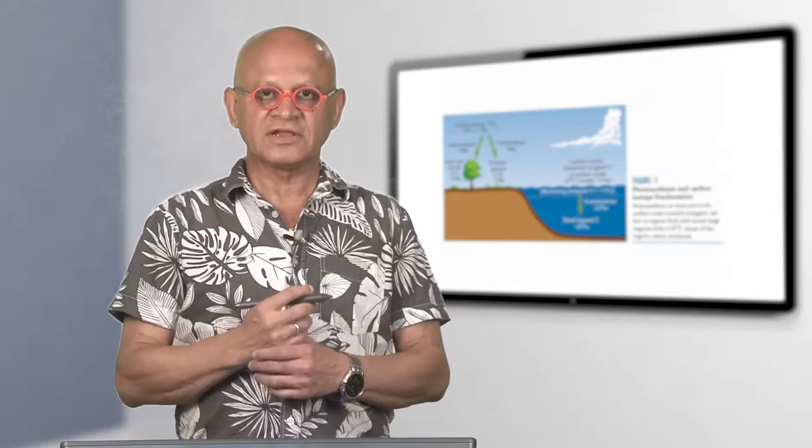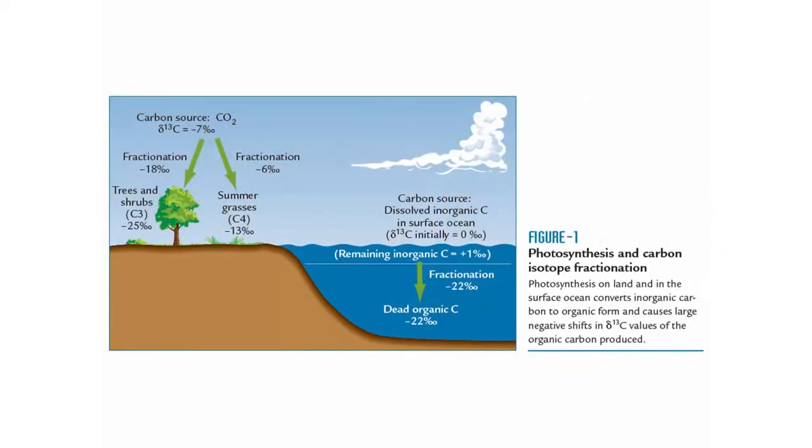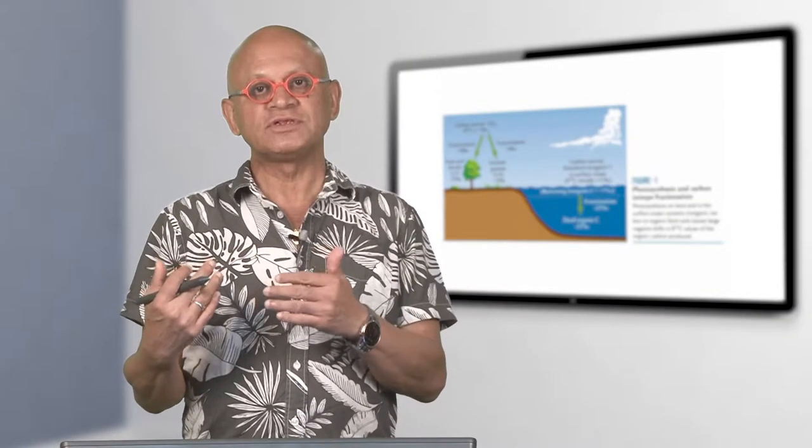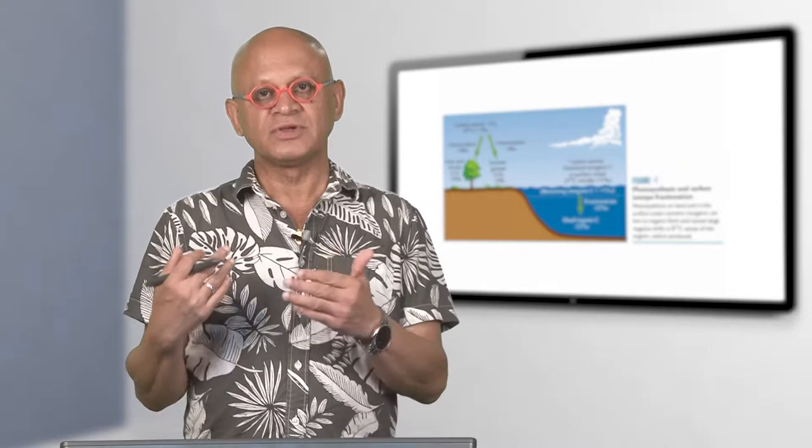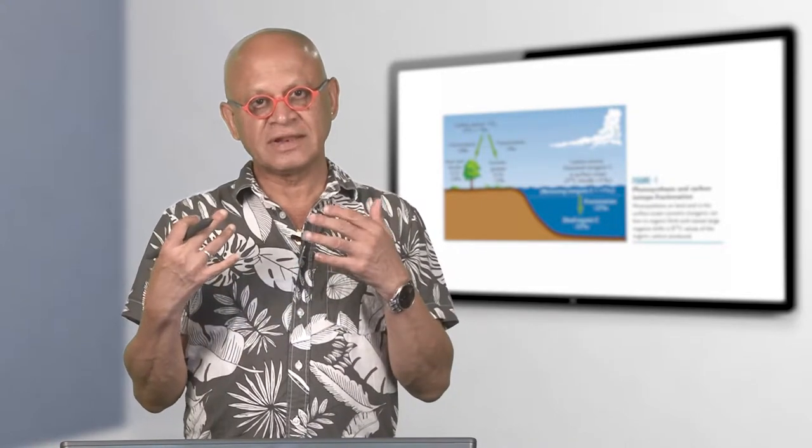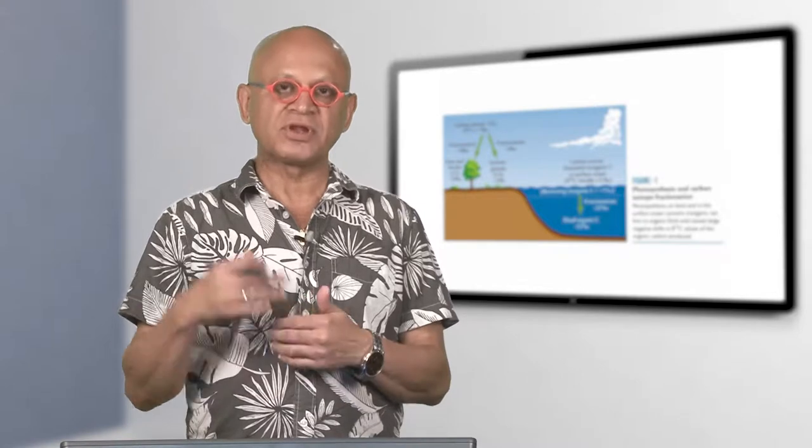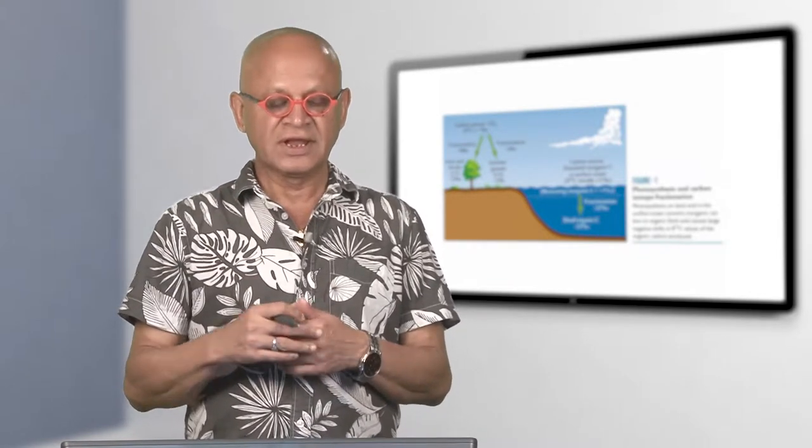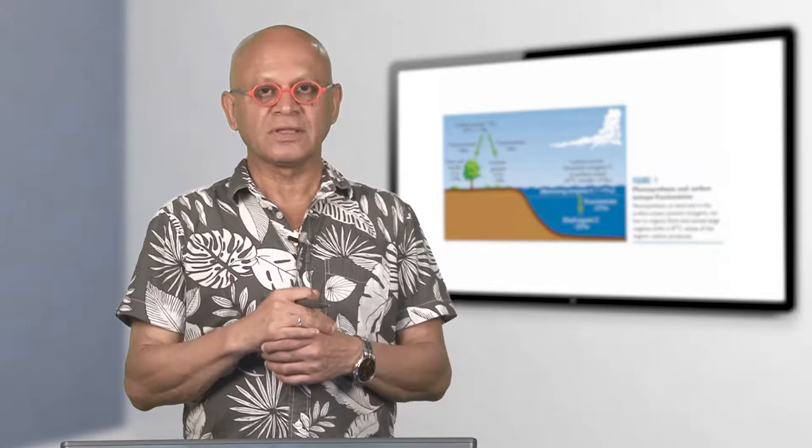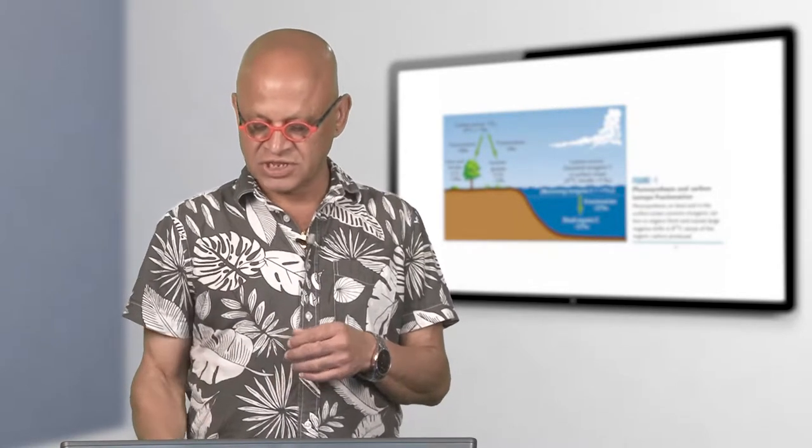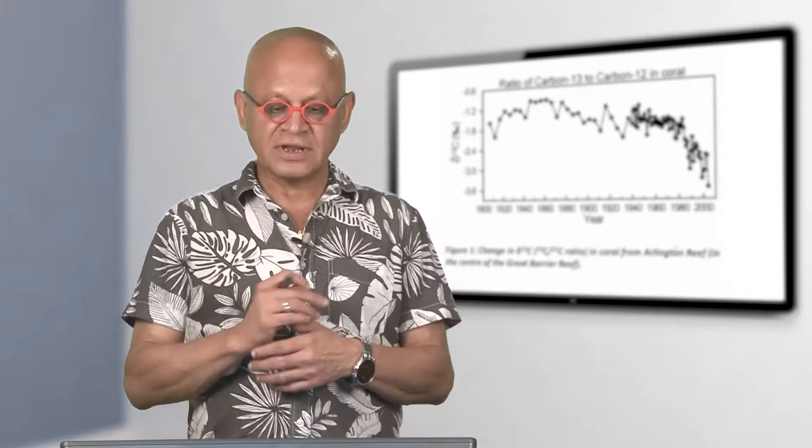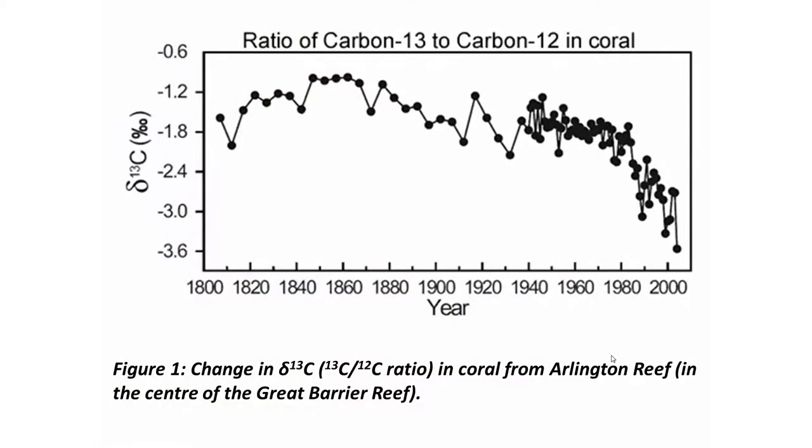We left the last lecture talking about the fractionation of carbon C13 and C12 by biological processes like photosynthesis. I asked the question: if we are burning fossil fuel, which is old hydrocarbon that was photosynthesized and had less C13 compared to the current atmospheric composition, does it show up as a carbon signature in the current atmosphere? Surely it does.